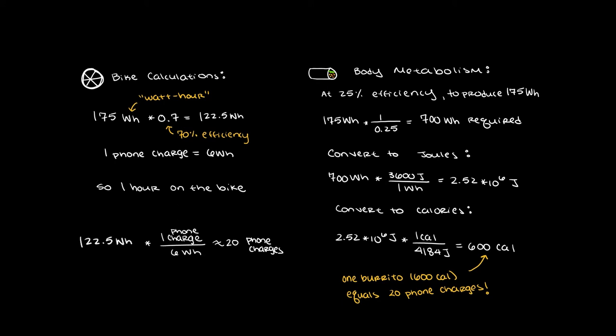Now, we need to convert that 700 watt hours into joules. What we do is take the 700 watt hours and convert it by 3600 joules is 1 watt hour, and we get 2.52 times 10 to the 6 joules.